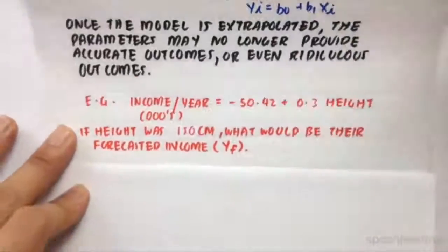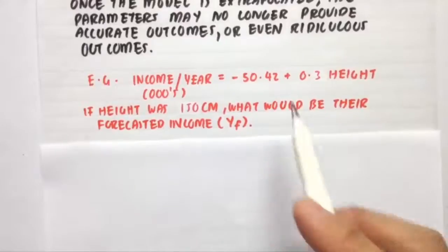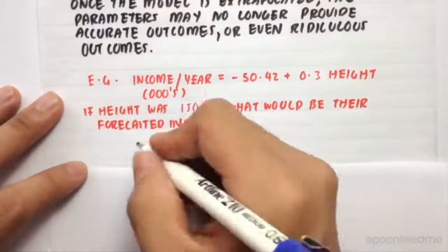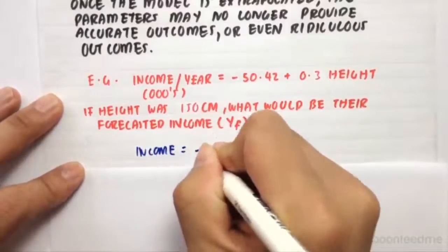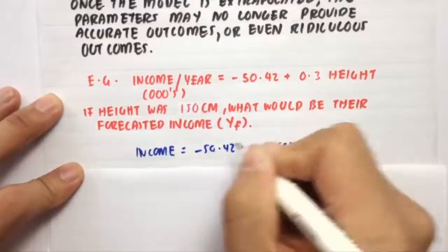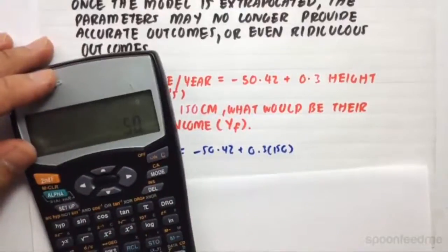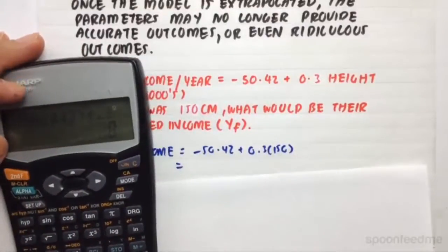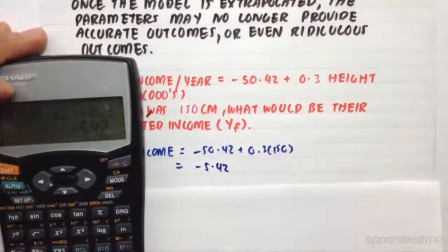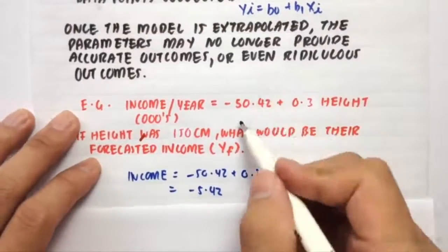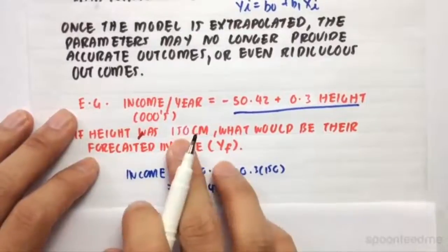For example, I have here, so income per year in thousands equals -50.42 plus 0.3 height. So if height of someone was 150 centimeters, what would be their forecasted income? So their income would equal -50.42 plus 0.3 times 150. And if we calculate that, that gives us a total of -5.42. So they're actually losing money because of their height. However, the reason is due to this, is because when we were actually making this model, we didn't consider heights that were this small.